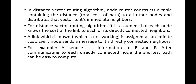In distance vector routing algorithm, each node — or router — constructs a table containing the distance to all other nodes. We consider each router as a node. Each router maintains a routing table that tracks where a packet came from, where to send it, and which path or route to use. Each router or node constructs a table containing the distance to all other nodes, similar to a routing table.